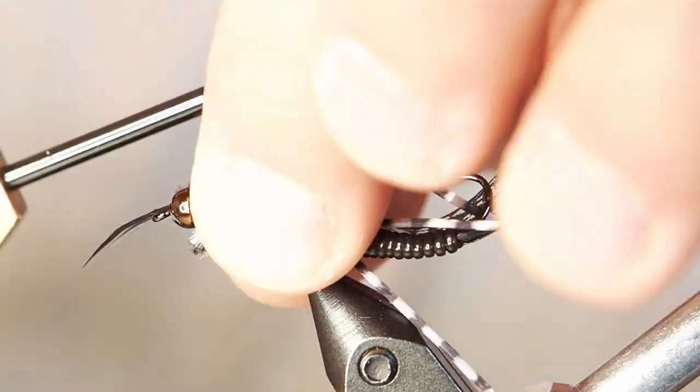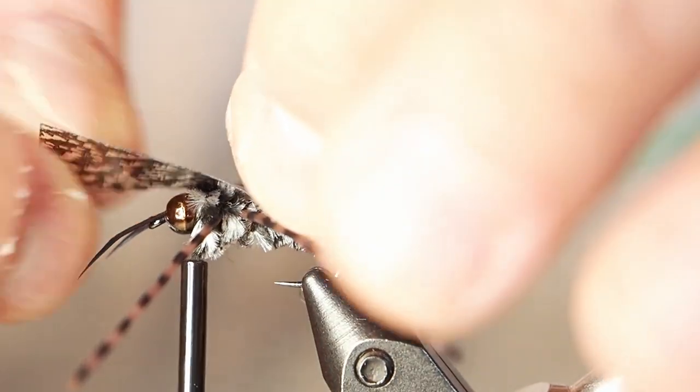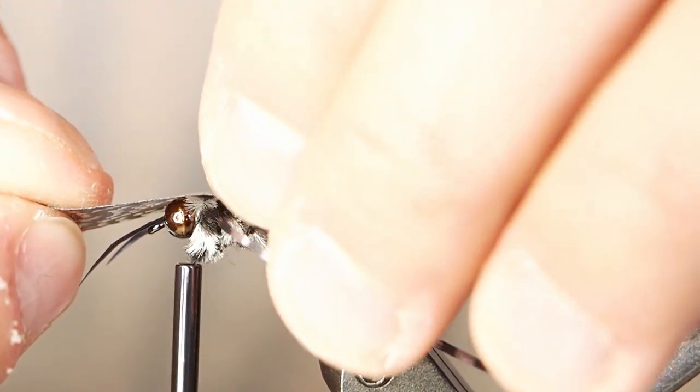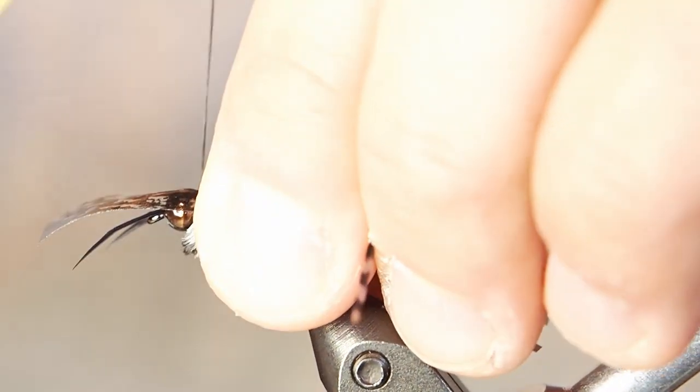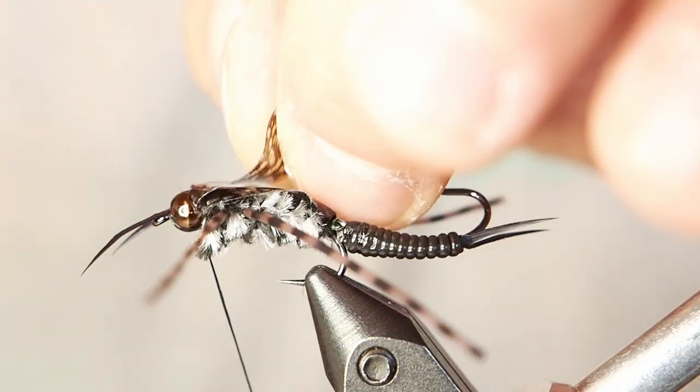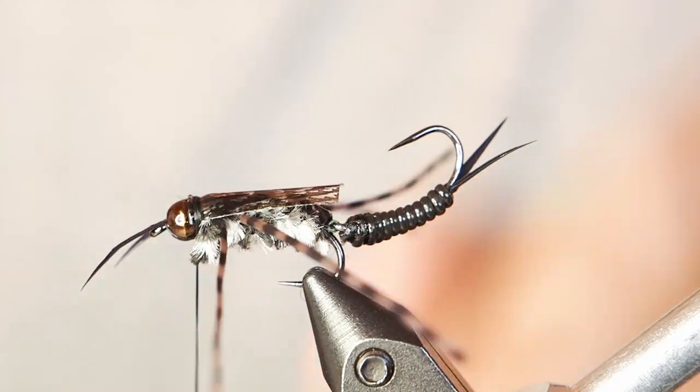And then for our last step, I'm going to pull that thin skin forward. This creates that nice buggy shell back, nice and tight. I'm going to lock it down right behind the bead just with a couple tight wraps. And then I'm going to fold it back again along itself going backwards. And I'm going to lock it down again. You can see my thread wrapping just over the fold there. Now that I've done that, I can finish this fly by whip finishing it. We're going to glue that in place.